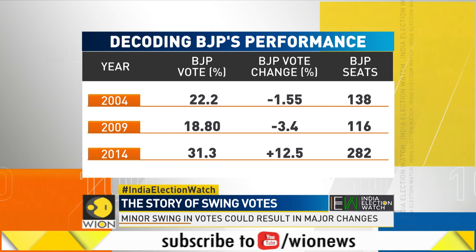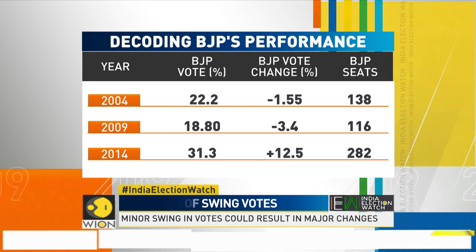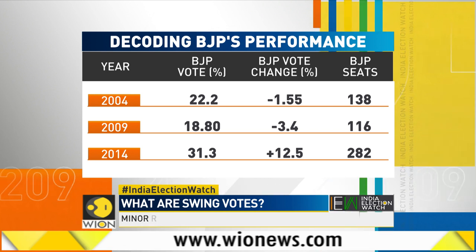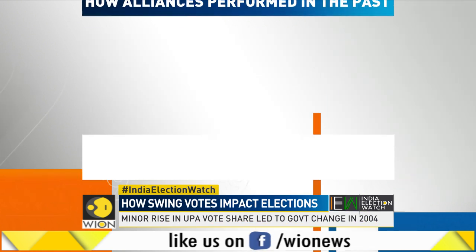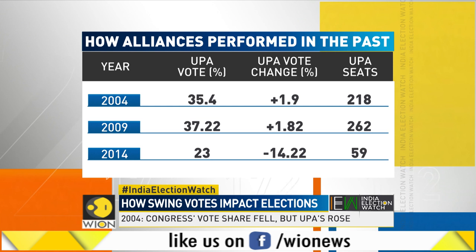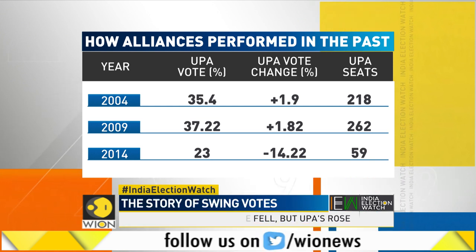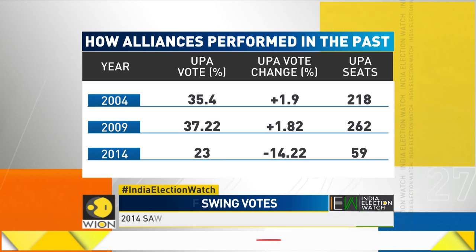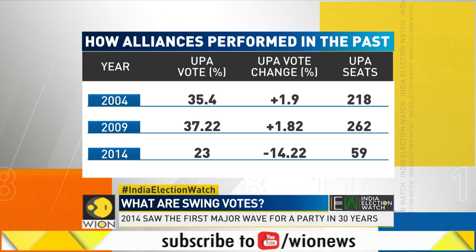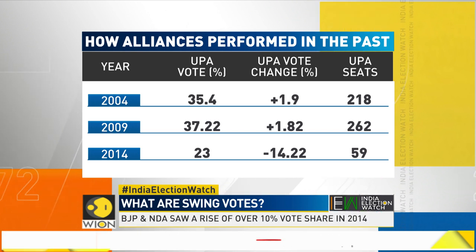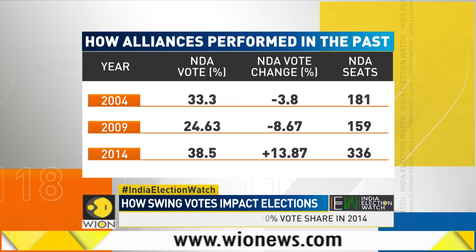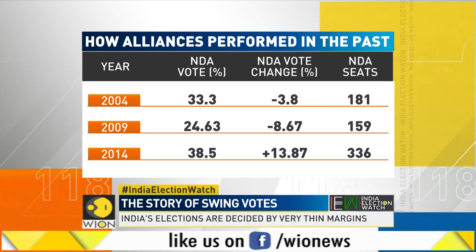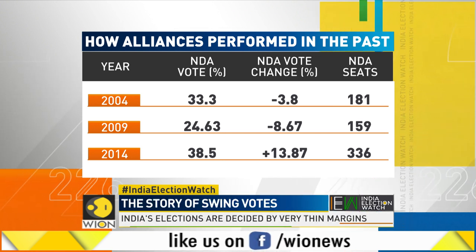The result: 282 seats, absolute majority. That's what vote share changes can do in a coalition. The phenomenon of swing votes is best demonstrated by the alliances. In 2004, UPA gained 1.9% of votes — a swing of just 1.9% in UPA's favor and a negative swing of minus 3.8% against NDA — leading to a change in government. In 2009, UPA gained 1.8% of votes while 8.7% of votes swung against NDA, resulting in a resounding victory for the UPA.